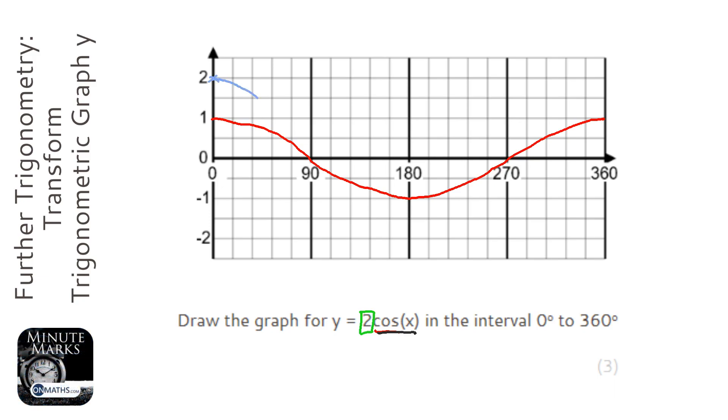Now it will still be zero at this point because zero times two is just still zero. But then it will go down to negative two here. Then same thing with here, it will still be zero, let's go up to positive two here.